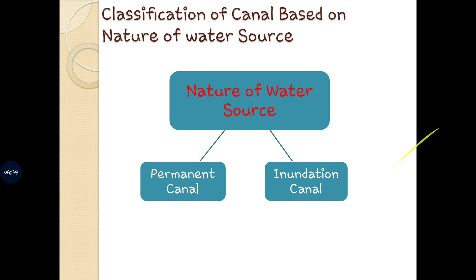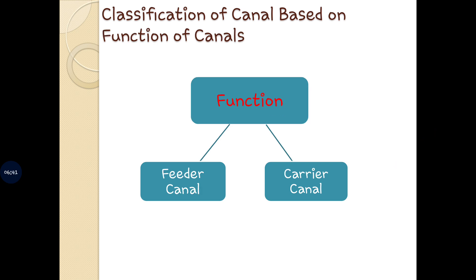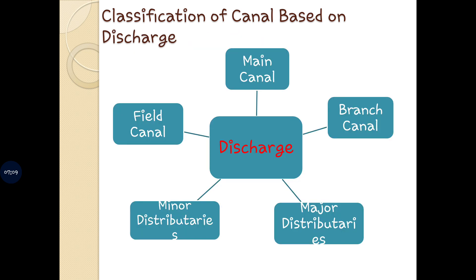The next classification is based on the function of the canal. It can be further divided as feeder canal or carrier canal. A feeder canal is constructed only for the purpose of supplying water to another canal. Carrier canals serve both purposes — they supply water directly to the irrigation fields as well as supply water to other canals.